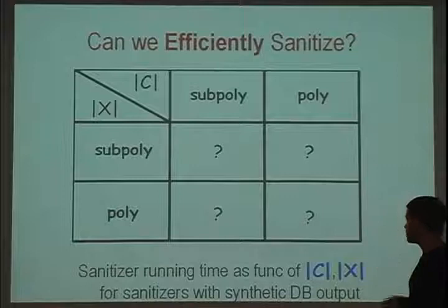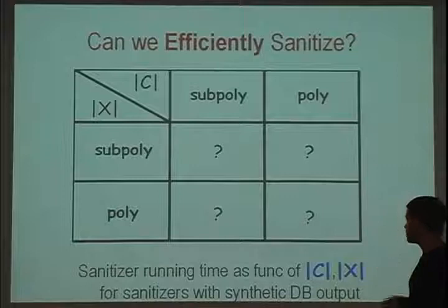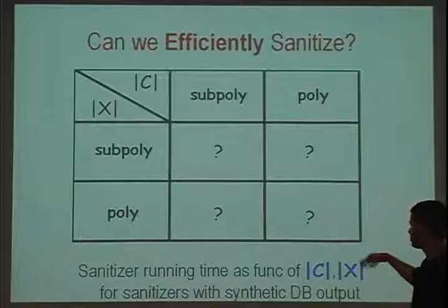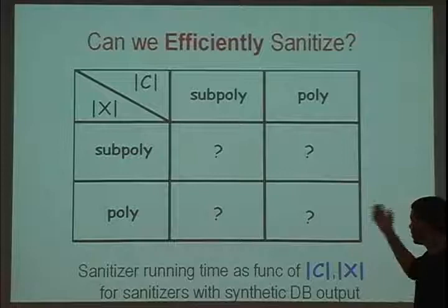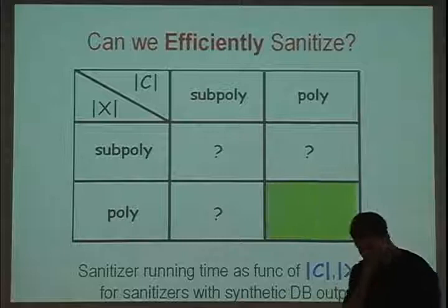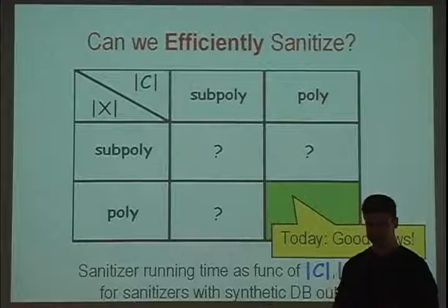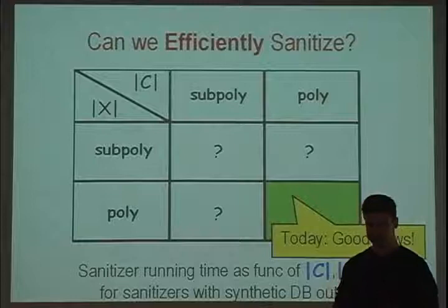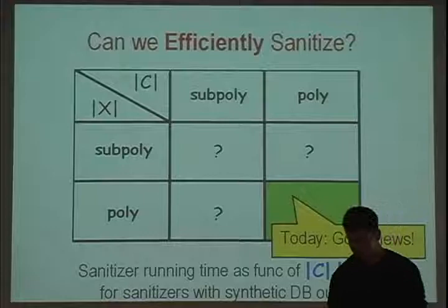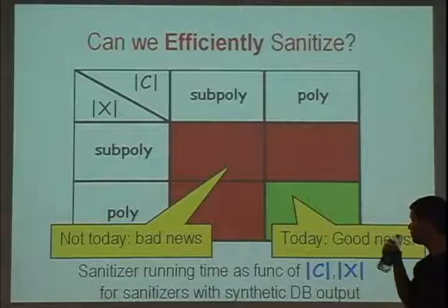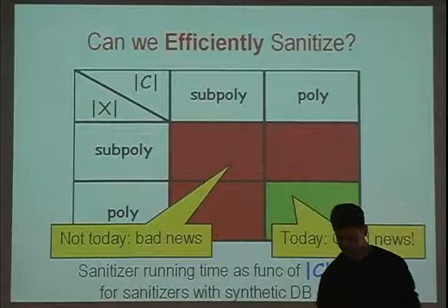The running time isn't just a problem in the analysis — in any way we know of for implementing this algorithm, this really will be the running time. The reason is it uses the exponential mechanism, a technique of McSherry and Talwar, which essentially has to enumerate every possible output and generate the distribution over all possible outputs by brute force. So the take-home from the Blum-Liggett-Roth result is that we can maybe do things we didn't think we could before, but we still can't do them in practice. We don't have an implementable mechanism for answering many queries on a small database.